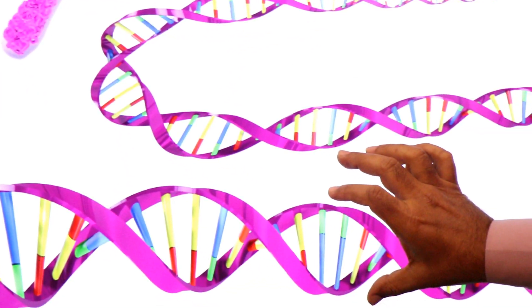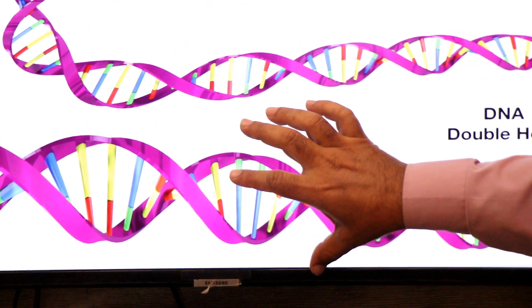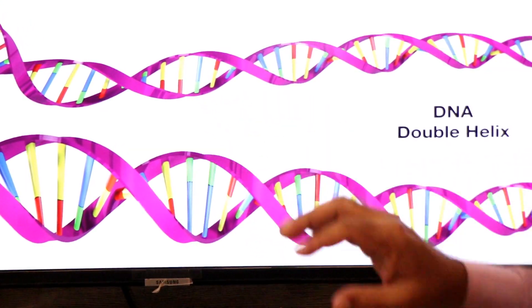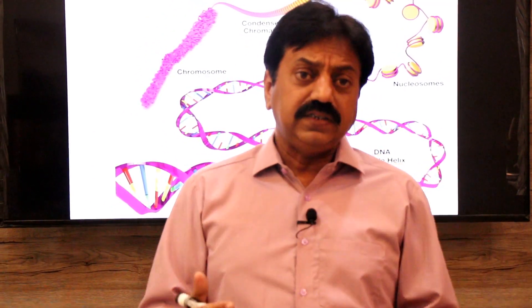In the nucleus of a human diploid cell there are 46 DNA molecules. All the collection of DNA molecules makes up your genome. Genome is the entire set of your genes.